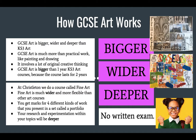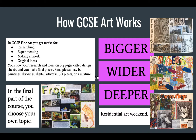One thing that many students really like about GCSE art is that there is no written exam and no revision. The 4 things that you get marks for in GCSE art are researching, experimenting, making artwork, and original ideas. You show your research and ideas on big pages called design sheets, and you make final pieces as well — you'll be used to those from Key Stage 3. Final pieces may be paintings, drawings, digital artworks, 3D pieces, or pieces of work that are a mixture.